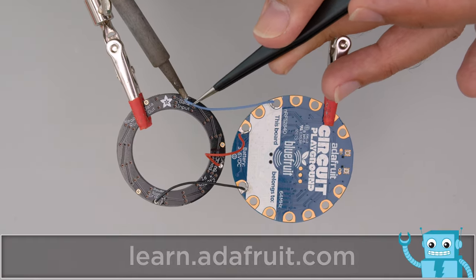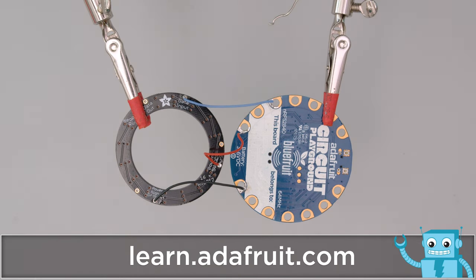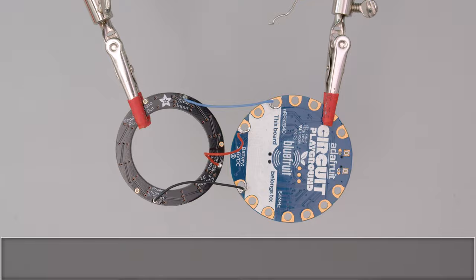We used short silicone wires to connect the NeoPixel ring to the large pads on the Circuit Playground Bluefruit. Be sure to check out the learn guide on the Adafruit learning system.